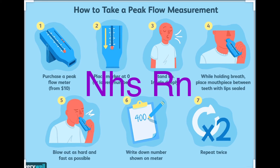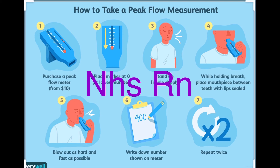If there is more than 20 percent difference between the highest reading and the predicted peak flow, this is a sign that the patient's respiratory condition is worsening. You must then follow the asthma action plan, seek advice from the GP, or dial emergency services on 999.